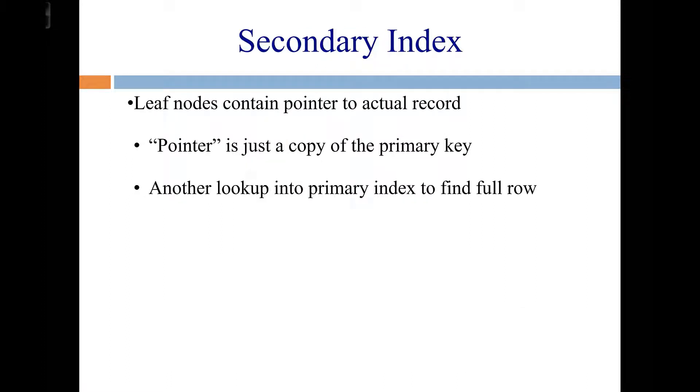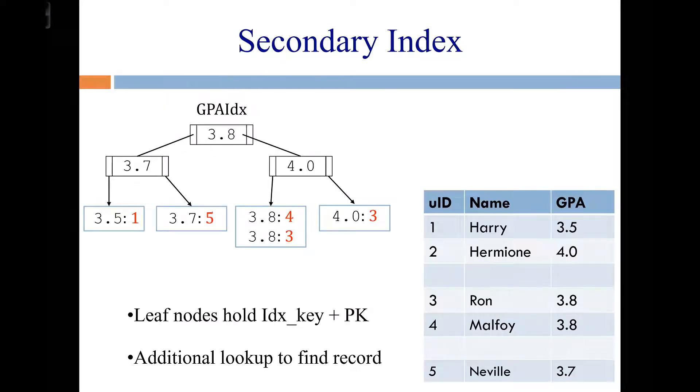So leaf nodes in a secondary index are just going to store a pointer, and the form that that pointer will take is it's actually just going to be a copy of the primary key value for that row. And that primary key is enough to find the full row because we could just go do a lookup in the primary index. So instead of saving an actual disk sector, an offset into the disk, or a memory address, which you normally think of as being a pointer, our pointer is just going to be the primary key value for the row.